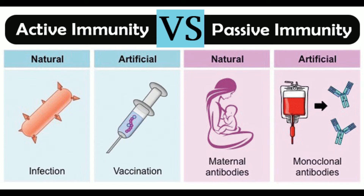External defense works in protecting the body from exposure to pathogens, and it includes skin, tears, and stomach acid. Internal defense — otherwise known as the second line of defense — includes fever, inflammation, and the mechanisms of phagocytes.